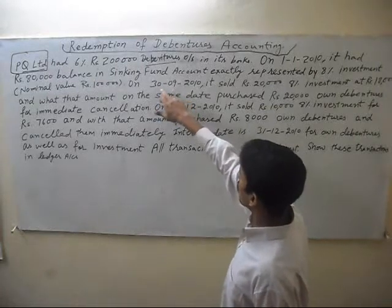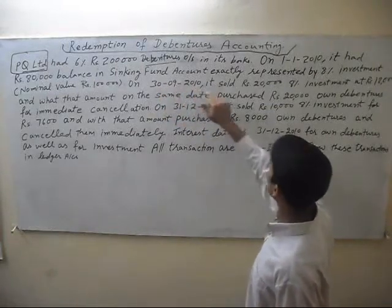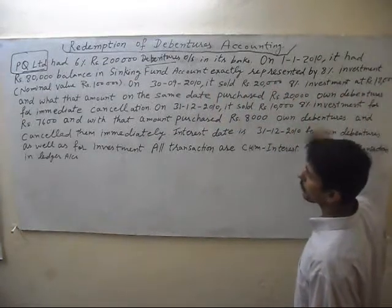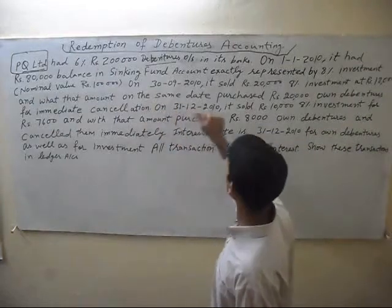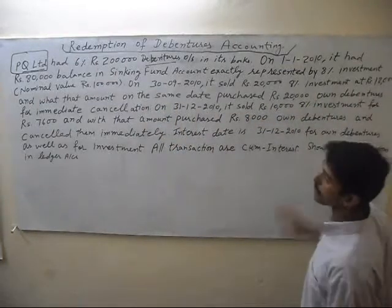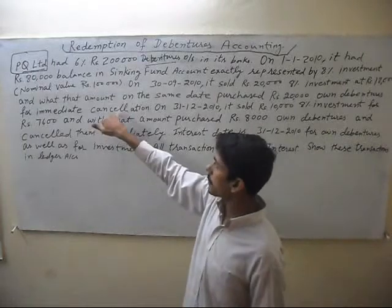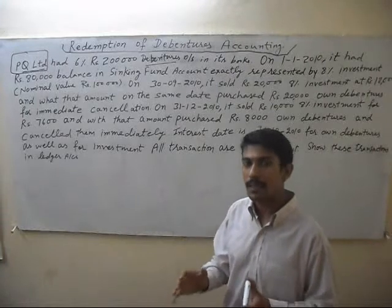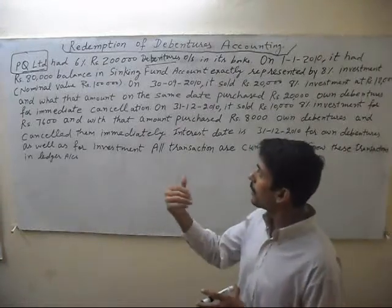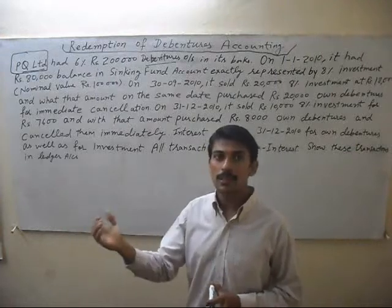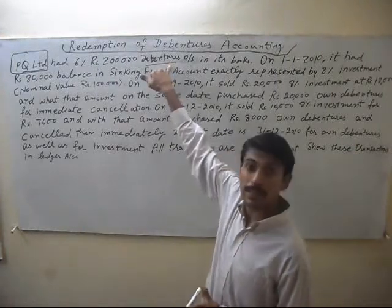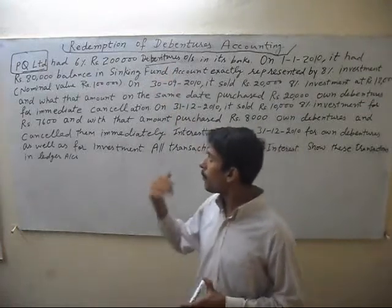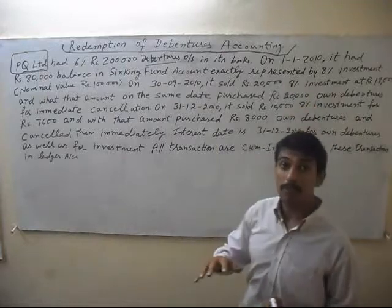On 30th 2010, it sold 20,000 of 8% investment at 18,000 and got that amount. On the same date, it purchased 20,000 of debentures for immediate cancellation. This means the company is doing business — on one side, the company invests the money received from debenture holders, and again, the company buys debentures in the open market.